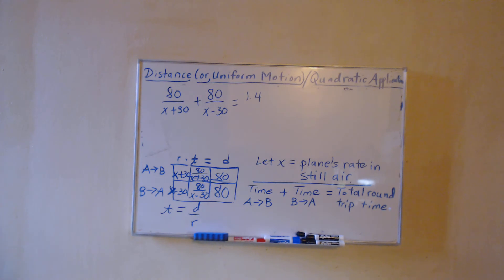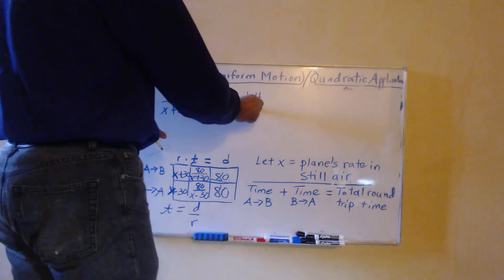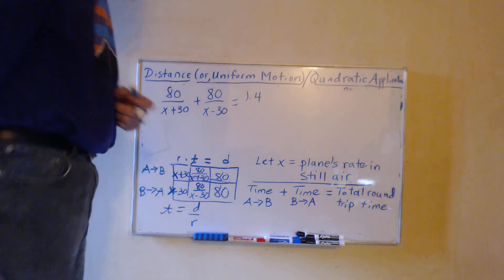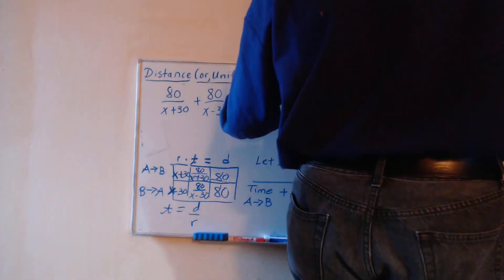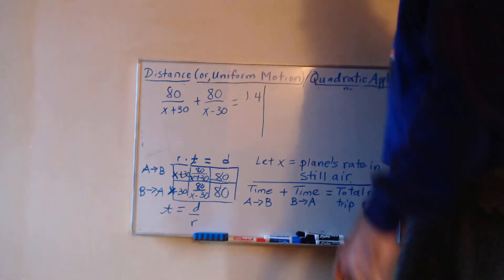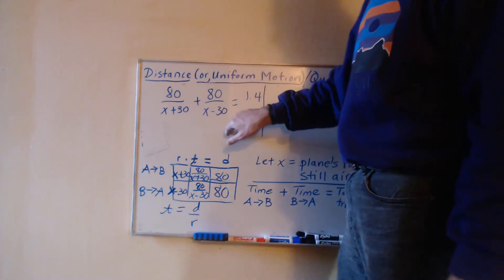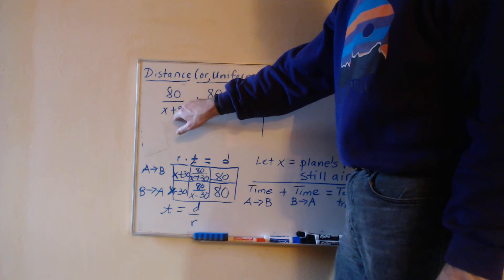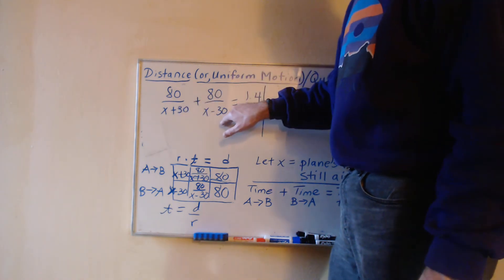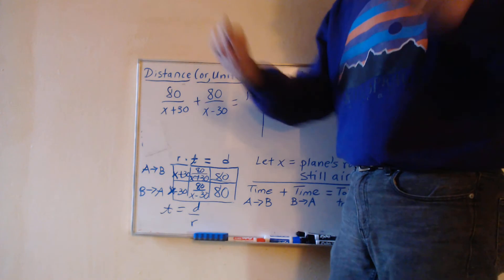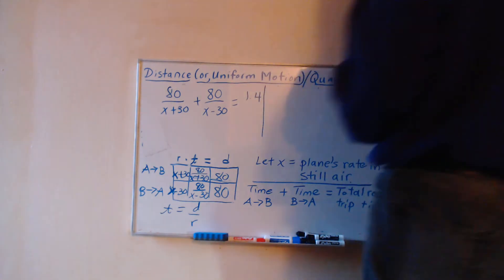So we're going to have 80 over x plus 30 plus 80 over x minus 30 equaling the total of 1.4 hours. We can get a least common denominator here.